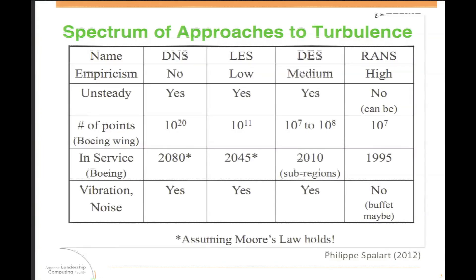To give you a spectrum of the various approaches in turbulence — I take this from a presentation by Philippe Spalart at Boeing — since turbulent phenomena have a large number of scales that must be simulated with high fidelity, you have approaches from DNS, direct numerical simulation, where you don't model any scales of motion, to large eddy simulation where you model some of the scales, to detached eddy simulation (DES), which is a hybrid RANS-LES approach, and then RANS. Philippe has a fairly conservative, probably pessimistic view of what can be achieved going forward, placing a lot of importance on hybrid RANS approaches for aerospace design.